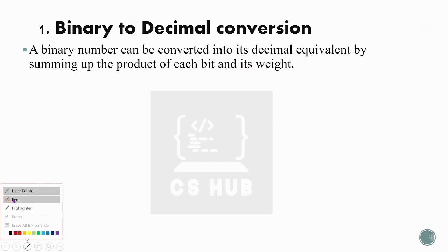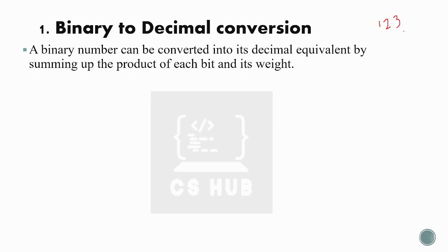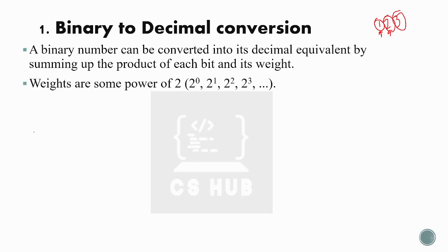For a decimal number like 123, we have 1×100 + 2×10 + 3×1 = 123. The key difference is: for binary, the weights are powers of 2; for octal, powers of 8; for hexadecimal, powers of 16. That is the difference between these number systems.